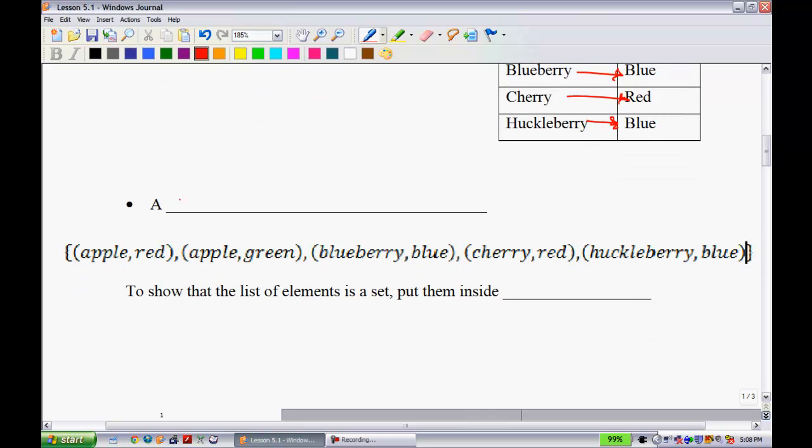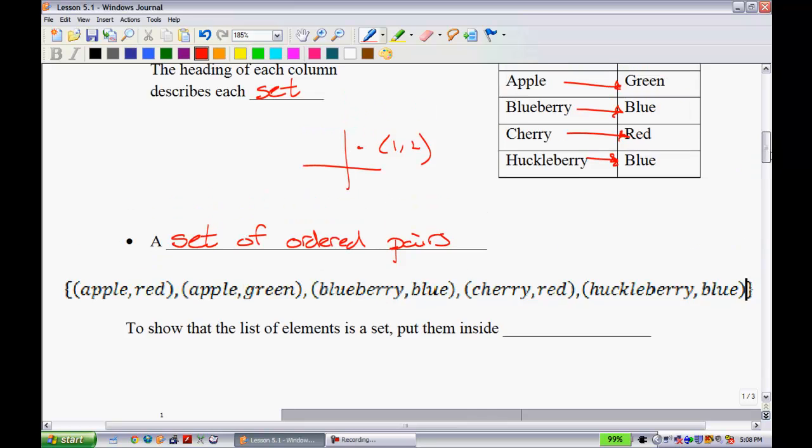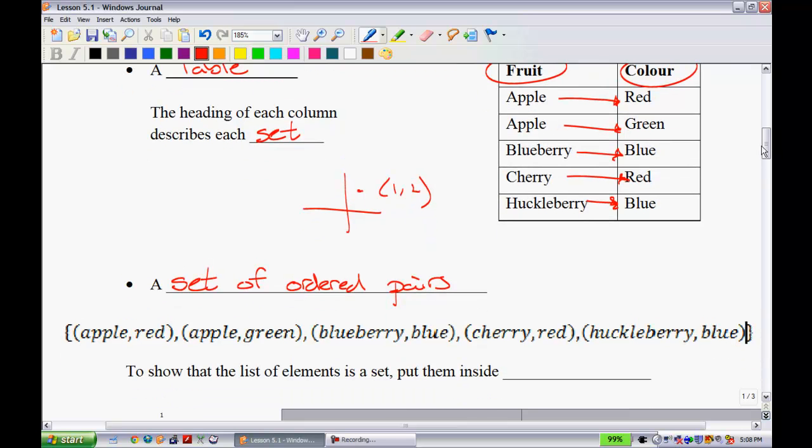In addition, we can represent a relation as a set of ordered pairs. You guys are used to using ordered pairs when we graph. For instance, we would go over one, up two. We'd write that as the ordered pair one, two. We can also do that with these different elements. For instance, we can just have an ordered pair. For instance, apple red, apple green, blueberry blue, and so on.